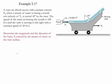Example 5.17. In this example, a vane on wheels moves with a constant velocity v0 when a stream of water having a nozzle exit velocity v1 is turned 45 degrees by the vane. The speed of the water jet leaving the nozzle is 100 feet per second and the vane is moving to the right with a constant speed of 20 feet per second. The goal of the problem is to determine the magnitude and direction of the force exerted by the stream of water on the vane surface.